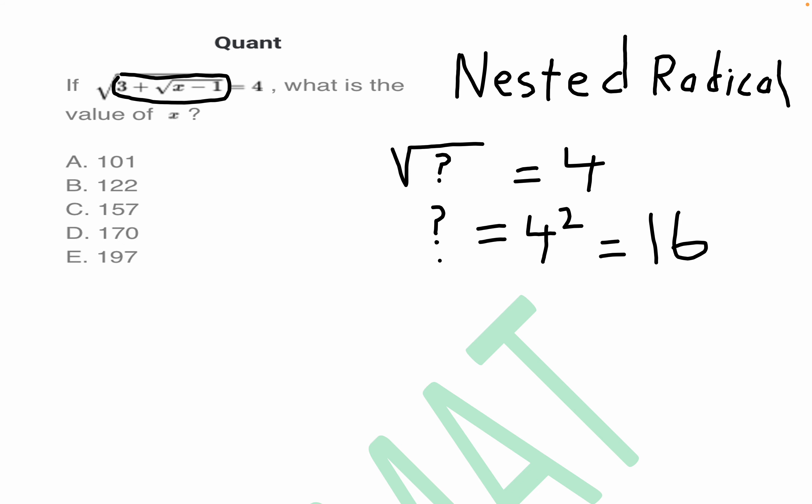So we'll write 3 plus the square root of x minus 1. This has to equal 16.